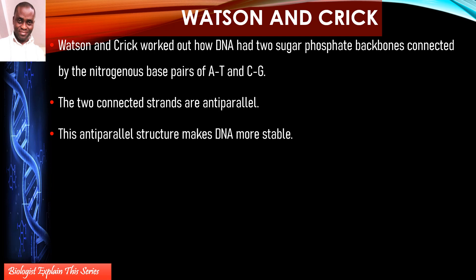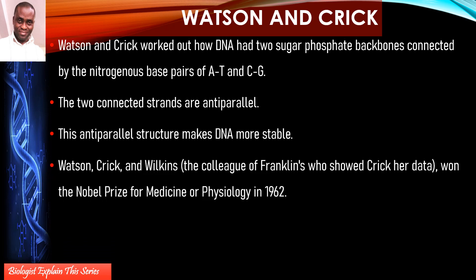Adenine is always bonded to thymine — that's the A-T bonding. Cytosine is always bonded to guanine — that is the C-G bond. These two strands are anti-parallel, meaning they face different positions: one in the 3' to 5' direction and the other in the 5' to 3' direction.